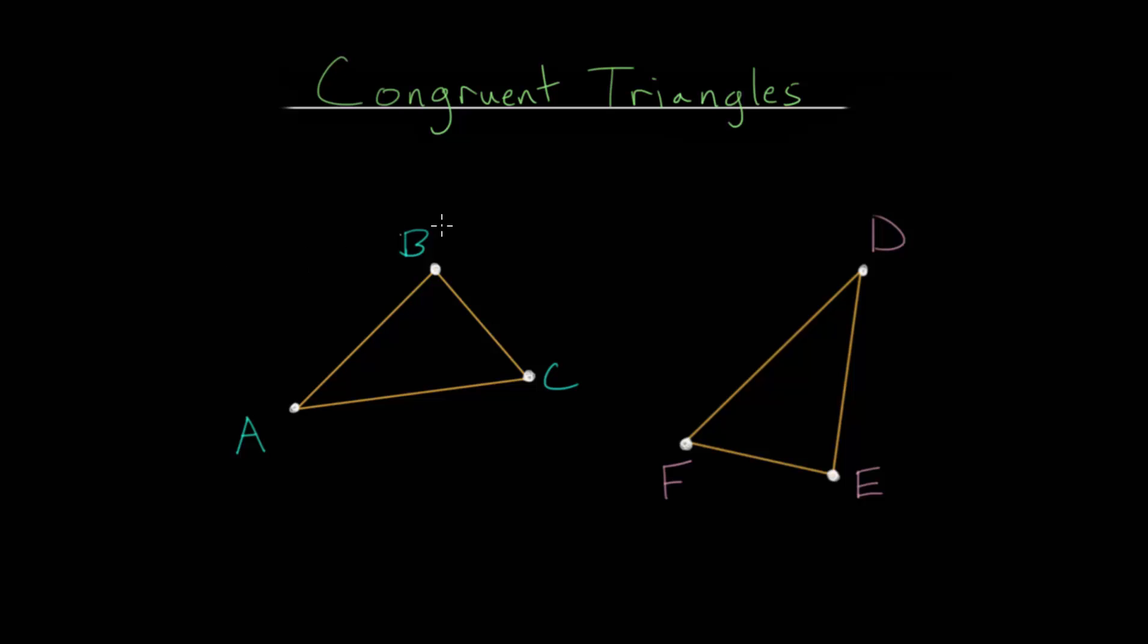In this video, I'd like to talk about congruent triangles. In geometry, congruent essentially means equal. But if we want a more precise definition, we can say that congruent triangles have the same shape and the same size.